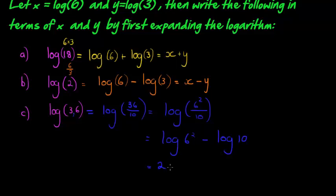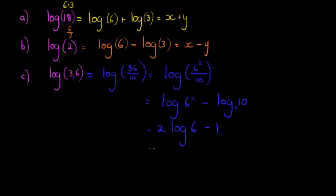And I know log of 6 squared can be 2 log of 6, which I have—that's x. So I've got x minus, what is this? Well, this is base 10 and 10, so this is just 1. So this becomes 2x minus 1, and that's it. Not so bad at all, don't you think?